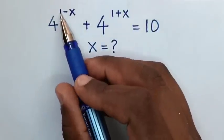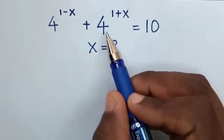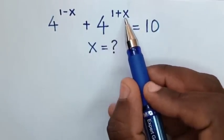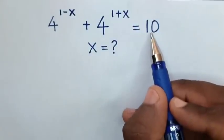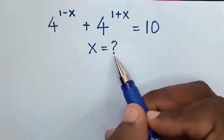How to solve 4 power of 1 minus x plus 4 power of 1 plus x is equal to 10, to find the value of x.